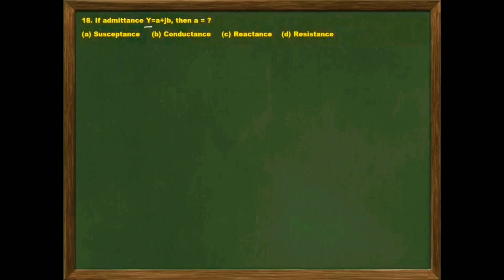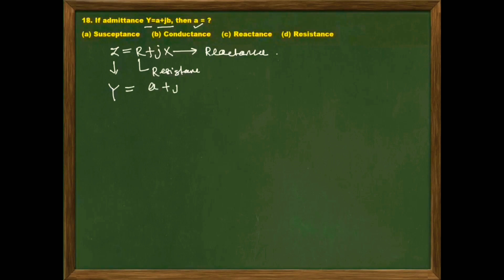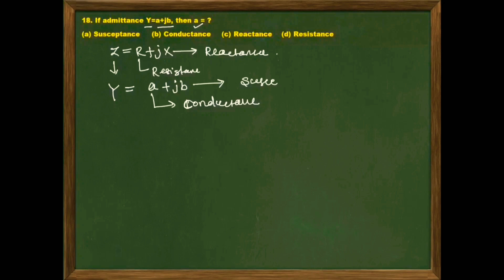This is a standard basic question on admittance. Impedance is represented by Z = R + jX, where R is resistance and X is reactance. The reciprocal of impedance is admittance Y = a + jb, where a is conductance and b is susceptance. So in this question, option B — conductance — is the right answer.